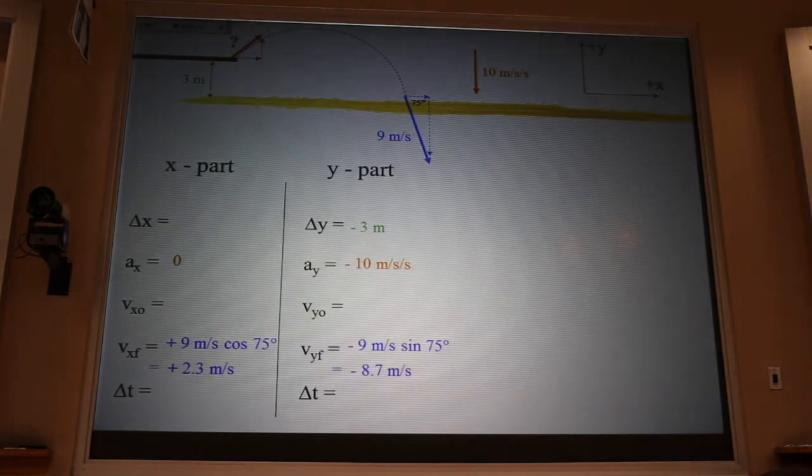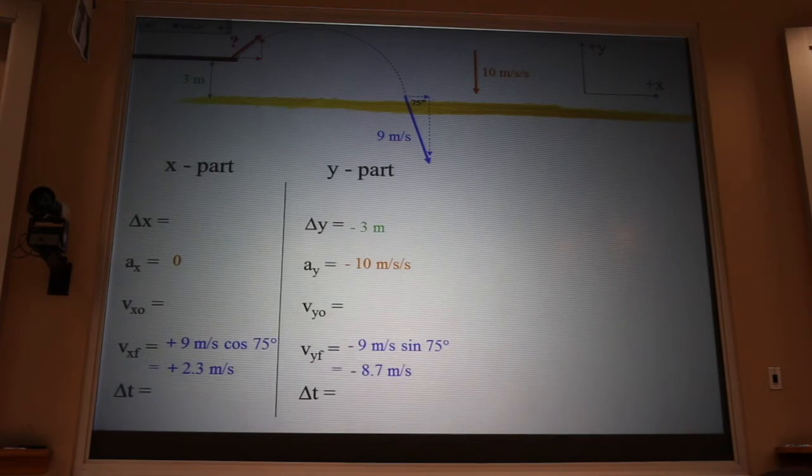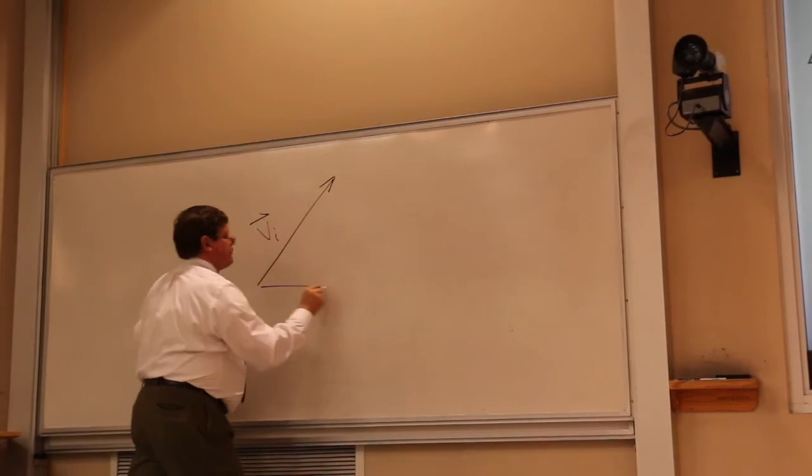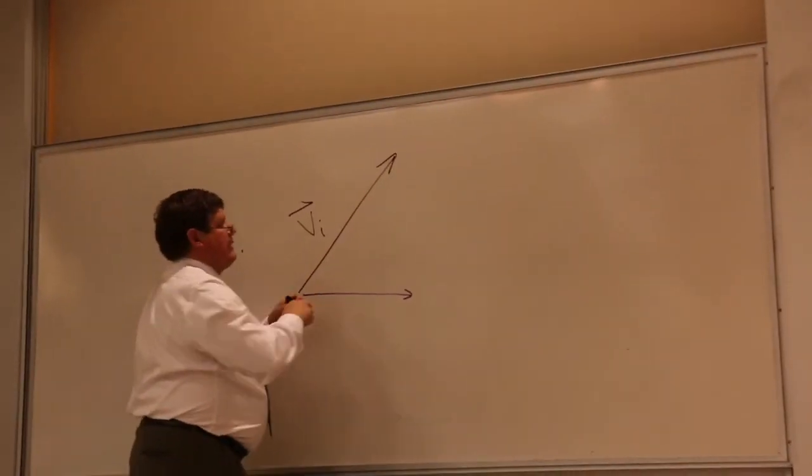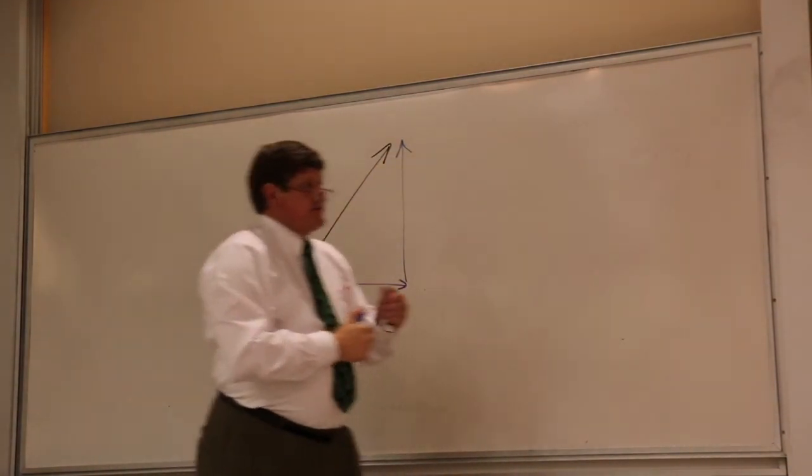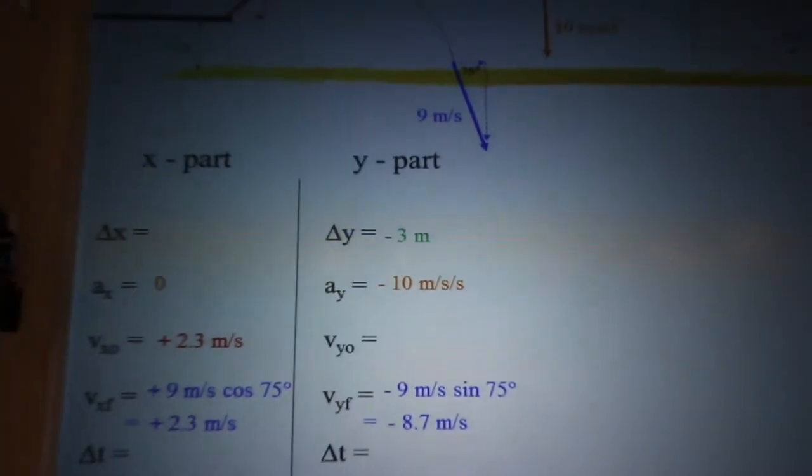Now, here's half the problem. Remember what we're trying to do here. We're trying to find the initial velocity vector at which she launches off the board. That's our goal. Well, that velocity vector has an x part, and it has a y part. Now, I just found the x part. Because the acceleration in the x direction is zero, the initial and final in the x direction is always the same.